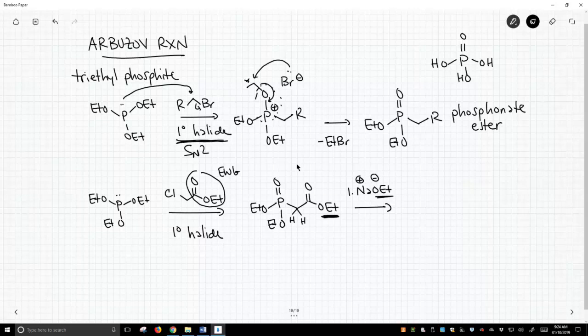I'm not going to draw the intermediate, but what we're going to do is we're going to deprotonate one of these hydrogens because that hydrogen is between two strong electron withdrawing groups now, and then we can treat this with any other alkyl halide. And so we make a carbanion. It's basically an enolate. It then attacks our SN2 electrophile.